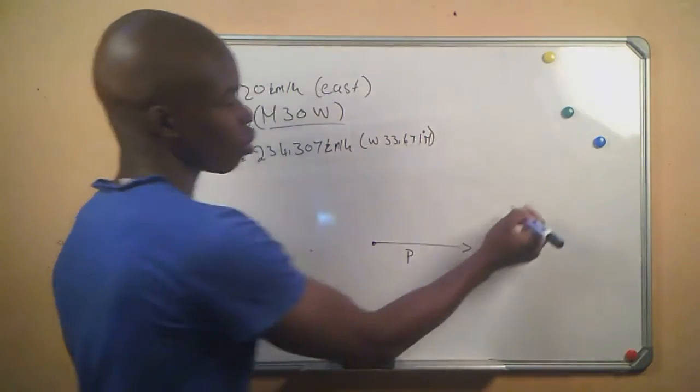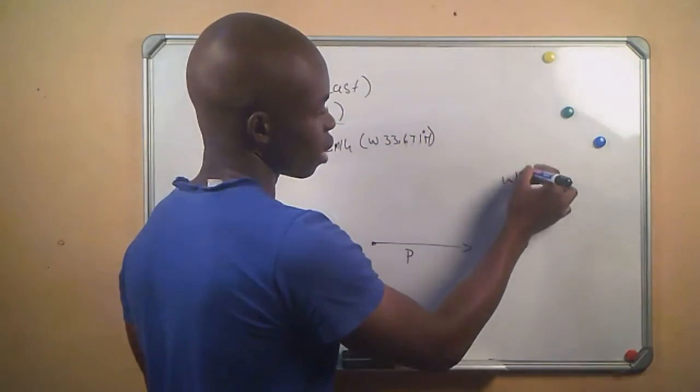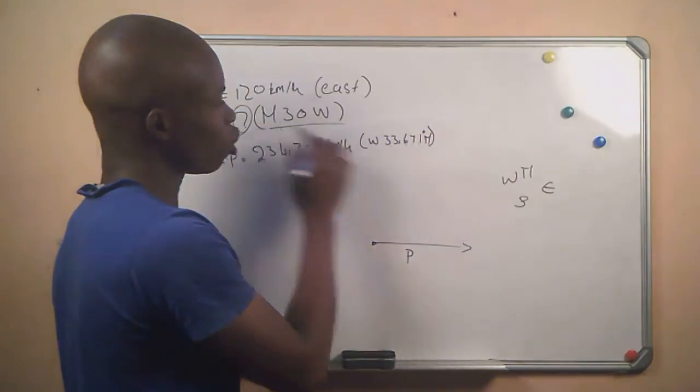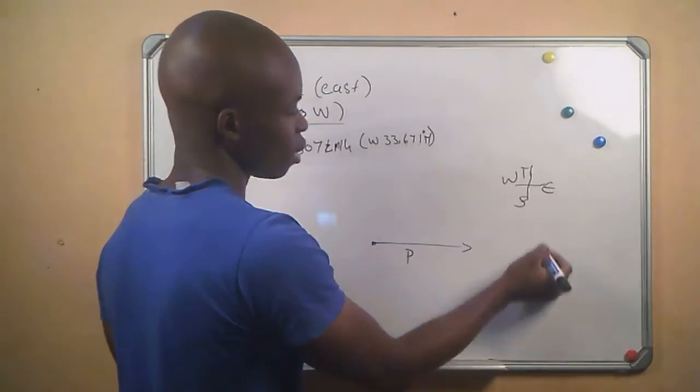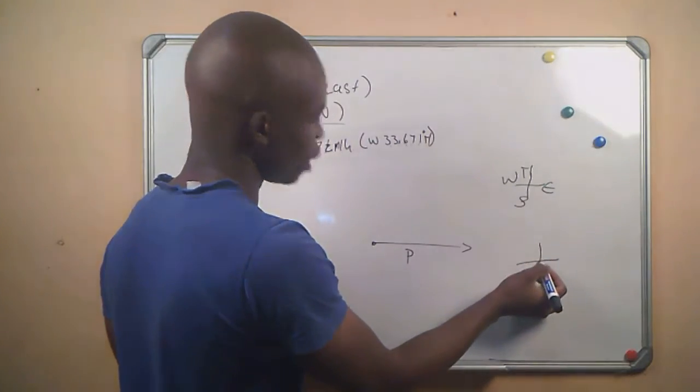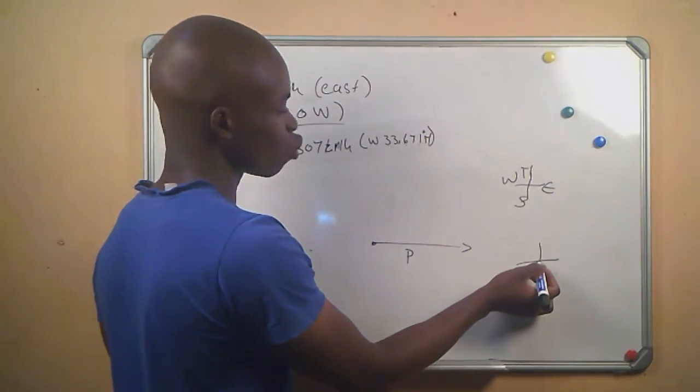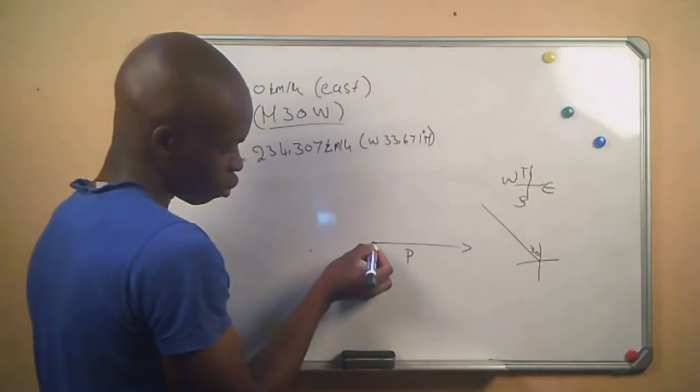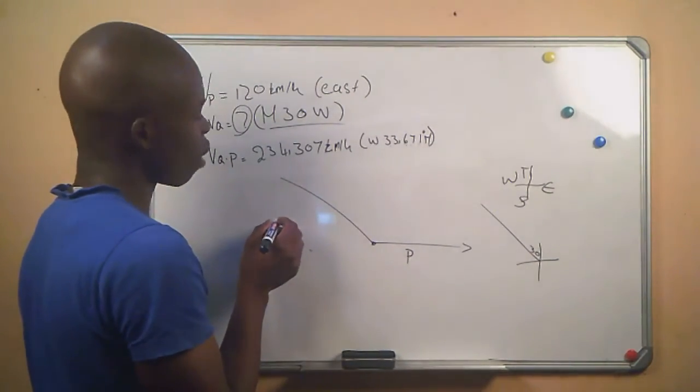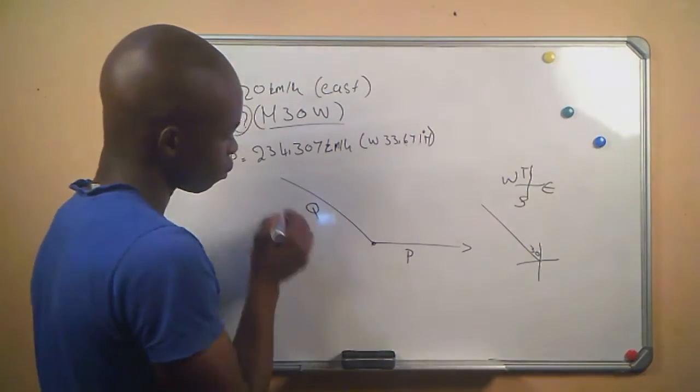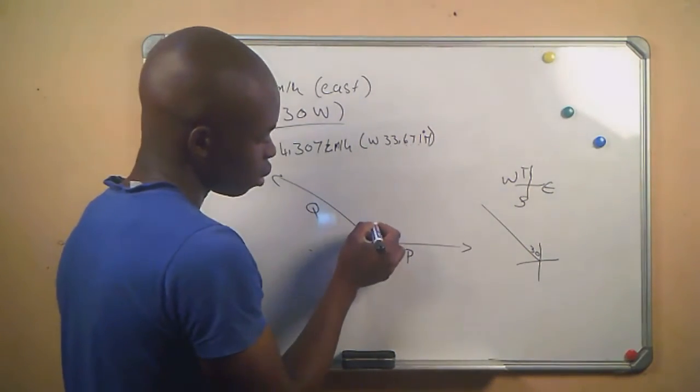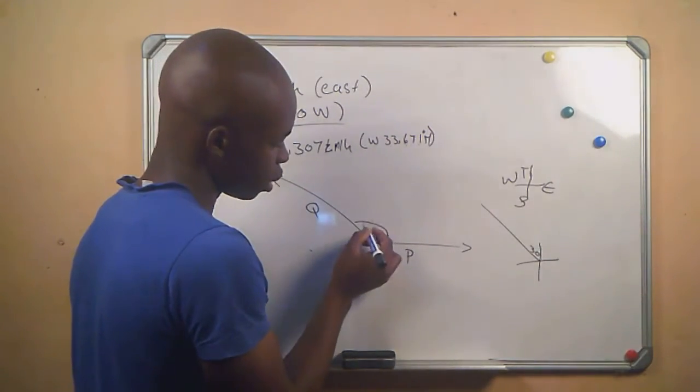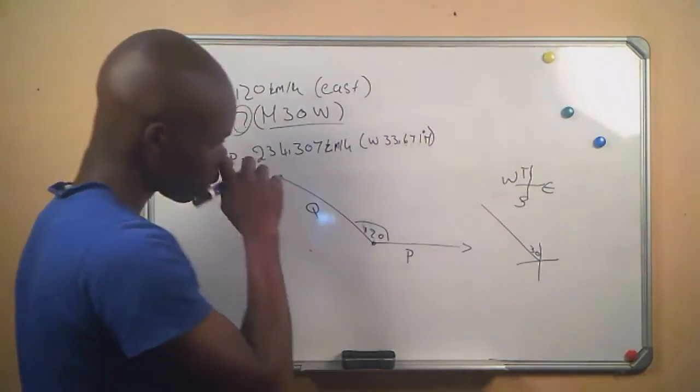So let's write our compass. North, west, never end. They said it is coming from the north, and then they say 30 going to the west, which means it will be like this. And then this state will be here. So we write our Q. This is Q. We know that this is 30 and this is 90, so this angle will be 120.